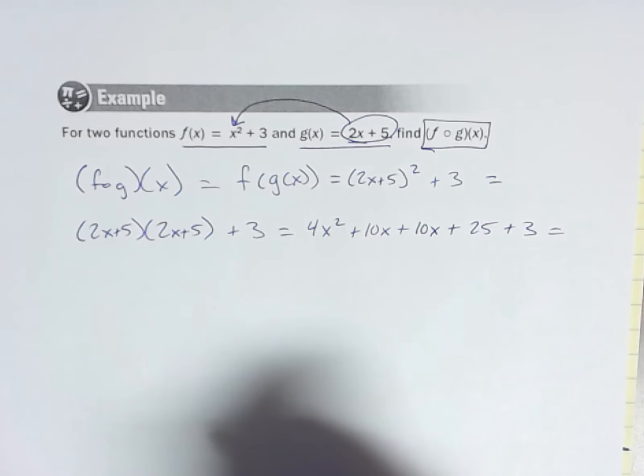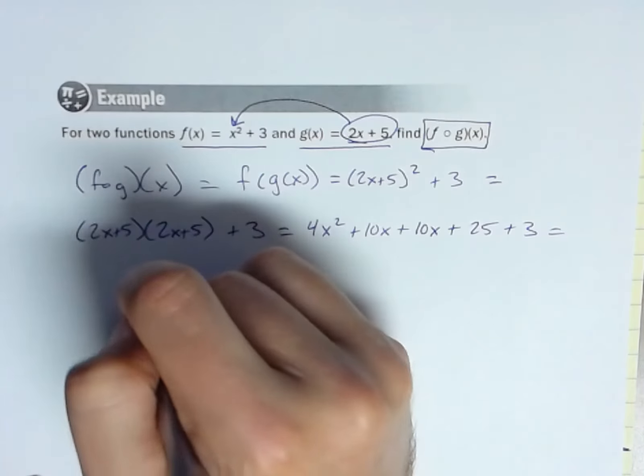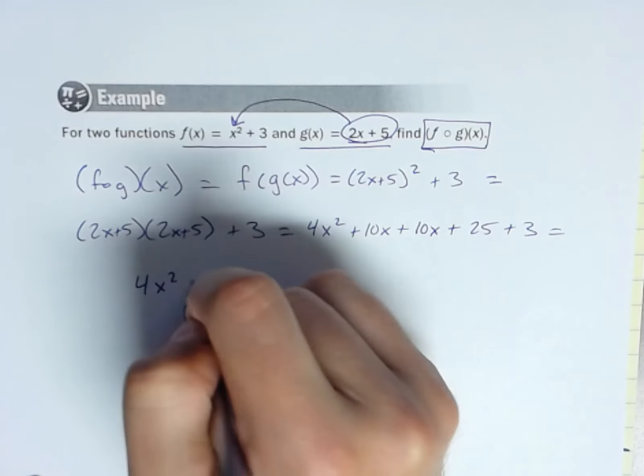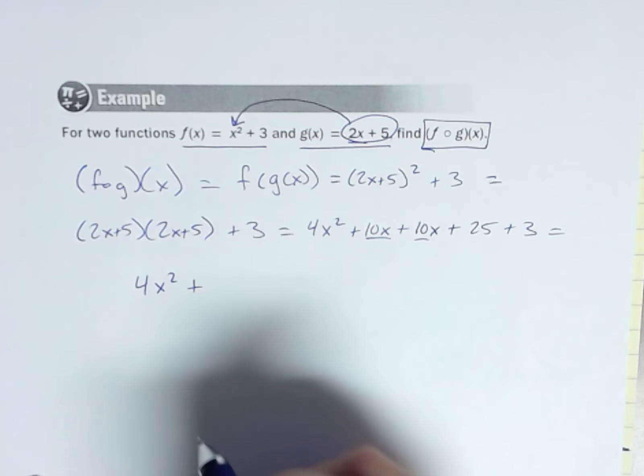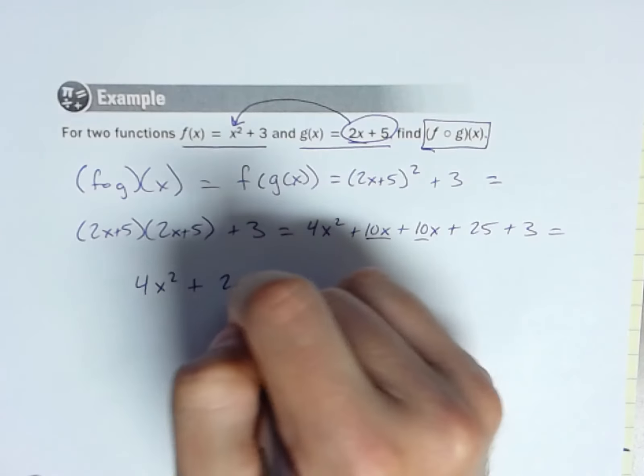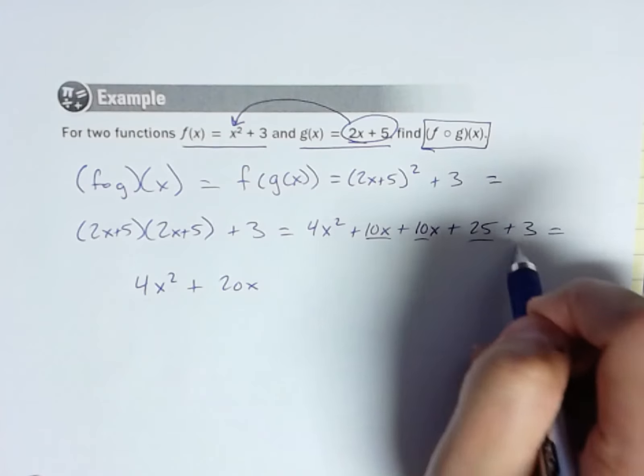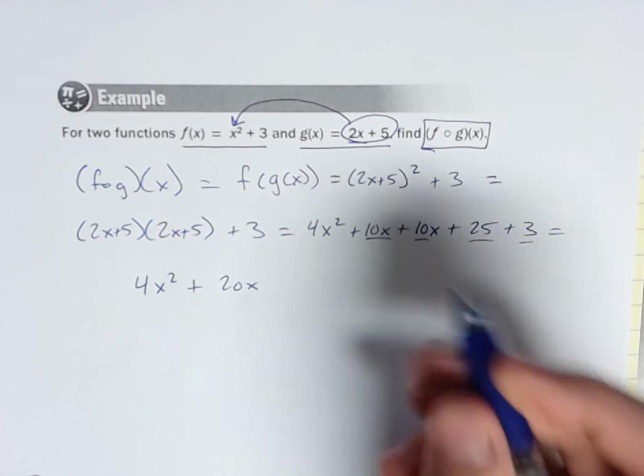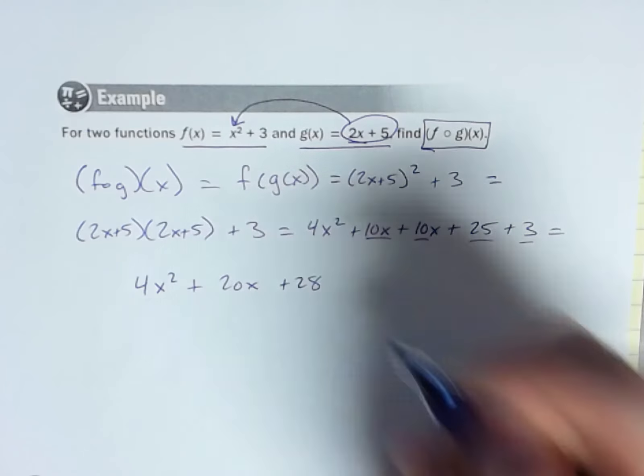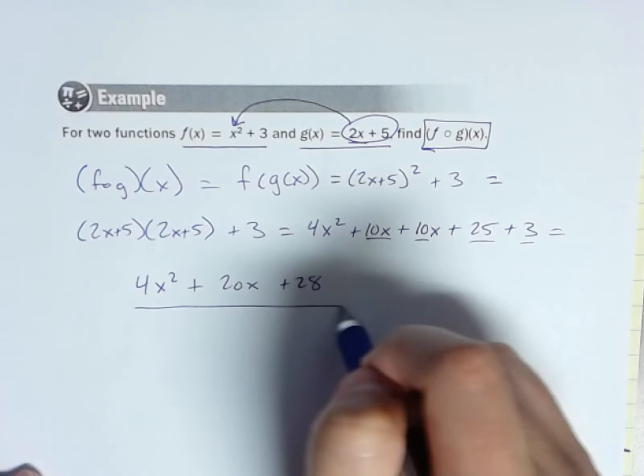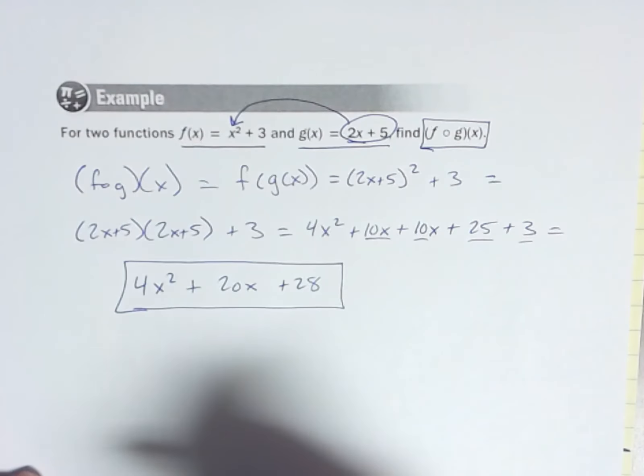And now let's combine like terms. We should be there. So 4x squared. These are like terms, we can combine those, so plus 20x. And then, of course, those are both constants, we can add those together: plus 28. And there is our new function, f composed with g, or f of g of x.